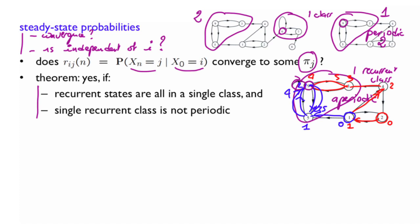OK, so now let's assume that the theorem holds. That means that yes, indeed, we have proved the existence of these steady state probabilities. The question is now how to calculate them. Well, the way to do it is to start from our key recursion that we had for the n-state transition probabilities. So where we assume here that we have m states.